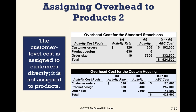For custom compass housing, the activity levels are quite different. Using the same activity rates of $320 per customer order, $630 per product design, and $19 per machine hour: 400 customer orders gives $128,000; 400 product designs gives $252,000; and 2,500 machine hours gives $47,500. Total overhead assigned to custom compass housing is $427,500, compared to $524,500 for standard stanchions.